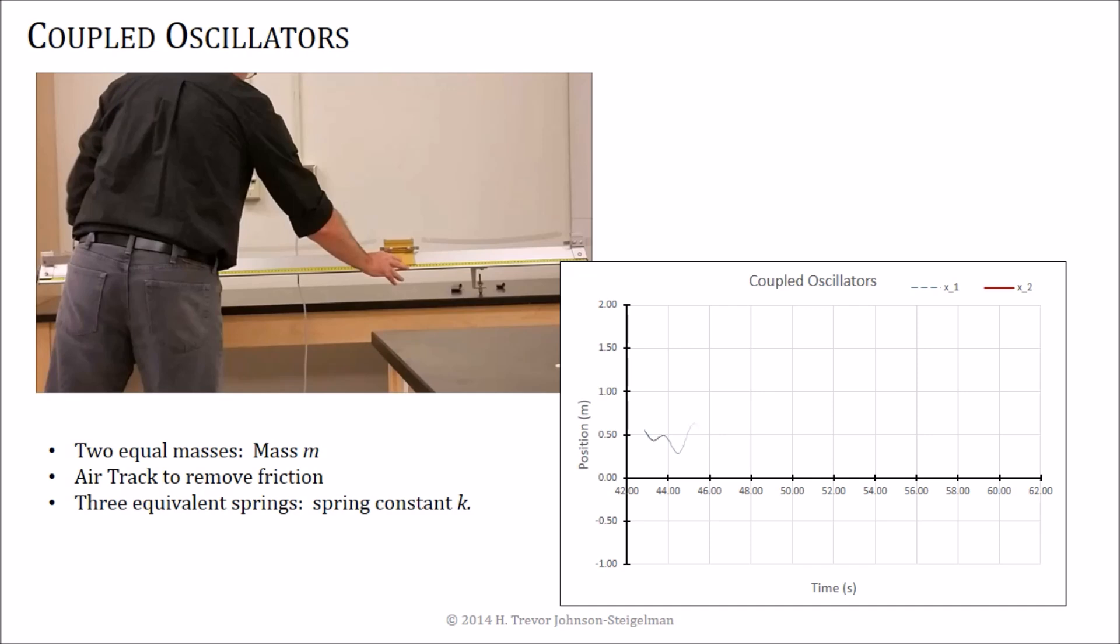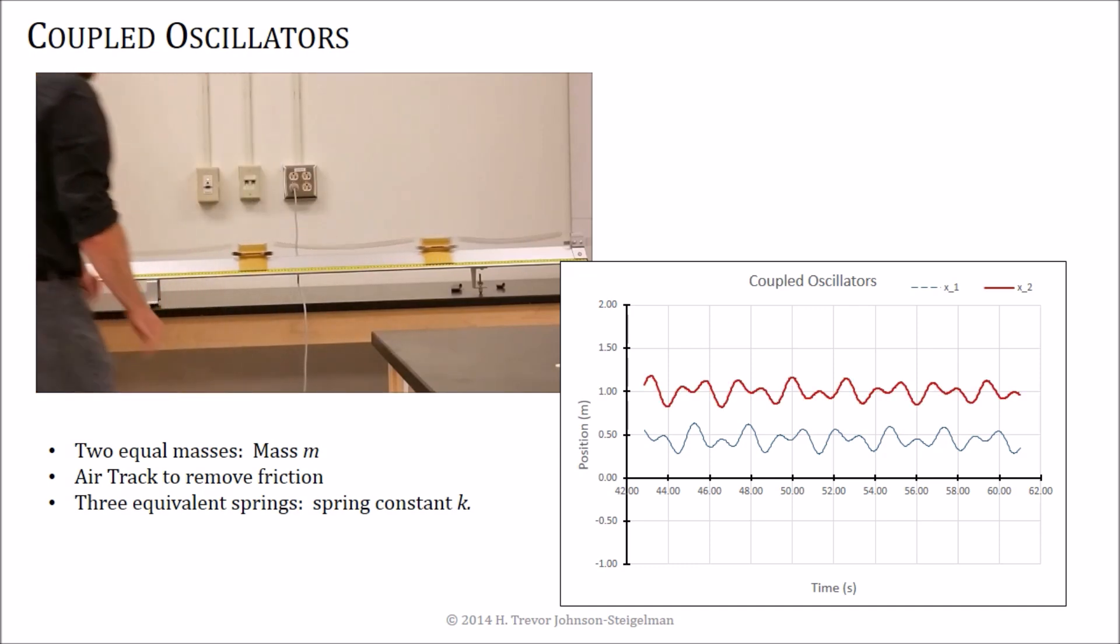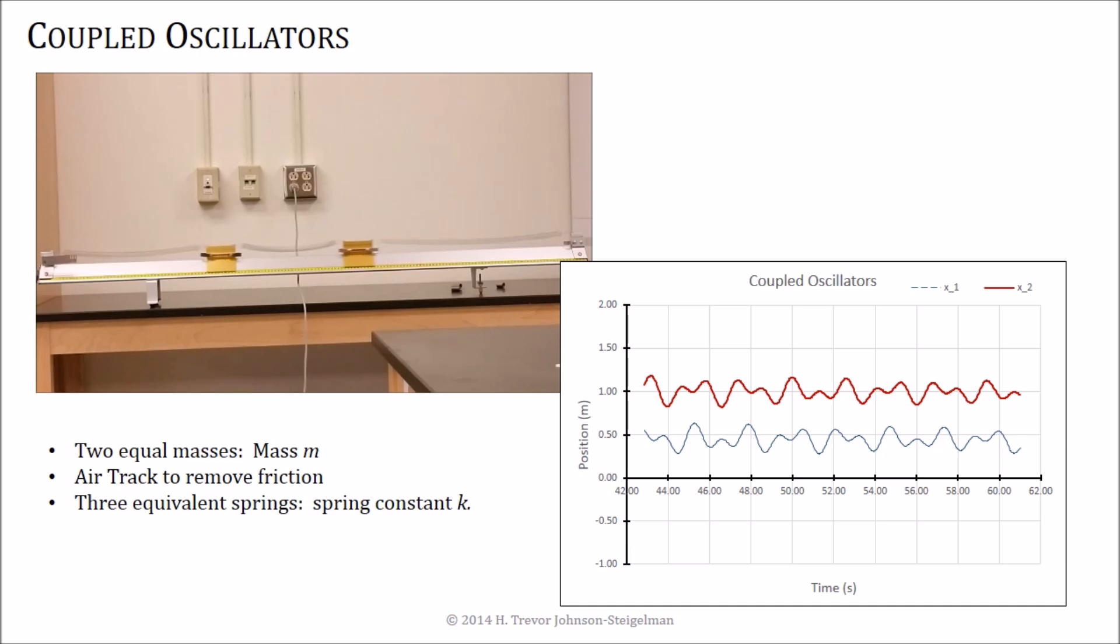If we map out their motion, there's the motion of the left-hand cart and the motion of the right-hand cart. And as you saw in the picture, or in the movie, that's actually a fairly complicated set of things going on. There's a little bit of obvious oscillations in here, but the amplitudes keep changing back and forth as we go.